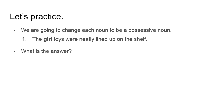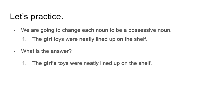Let's do another one. The sentence is: the girl toys were neatly lined up on the shelf. We add apostrophe S to show ownership, and it becomes: the girl's toys were neatly lined up on the shelf. It's showing that they are her toys.